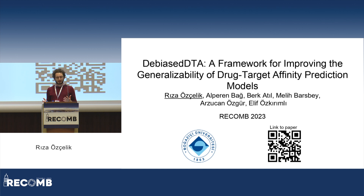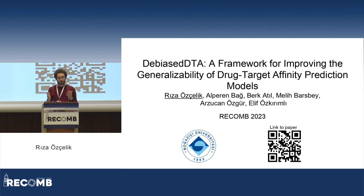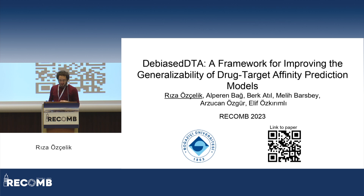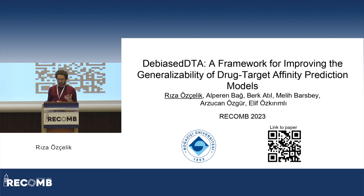The science I have been doing toward the end of my master's was trying to improve the generalizability of drug-target affinity prediction models. We have come up with a training framework called Bias DTA, and today I want to talk about it. But first — before improving the generalizability of those models — why do we even need drug-target affinity prediction models?